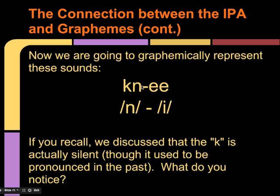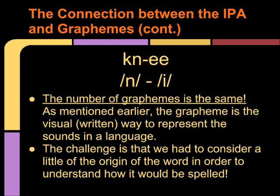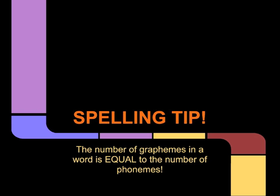As you can see here, we have now assigned the graphemes to their particular phonetic representation. If you recall, we discussed that the K is actually silent, though it used to be pronounced in the past. The number of graphemes is the same. The grapheme is the visual or written way to represent the sounds of a language. The challenge is that we had to consider a little of the origin of the word in order to understand how it would be spelled. Our first spelling tip is that the number of graphemes in a word is equal to the number of phonemes.